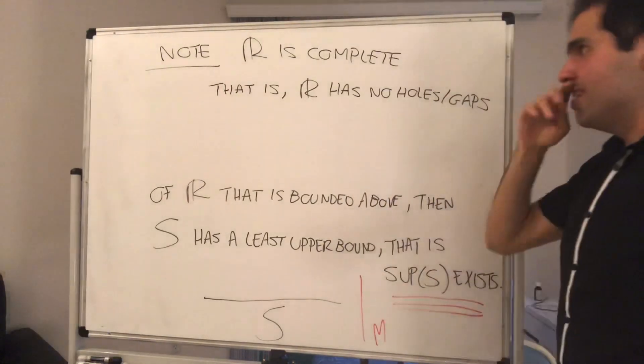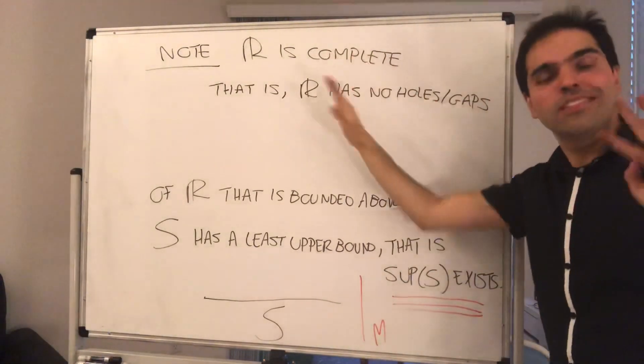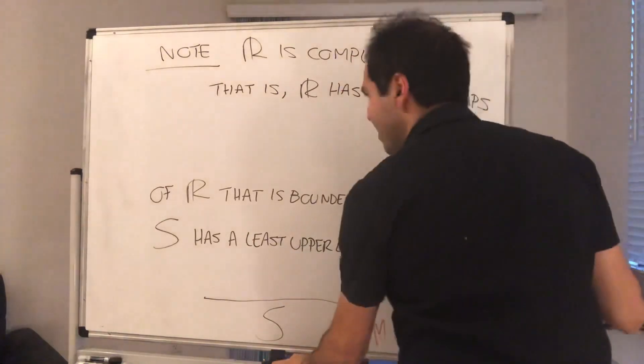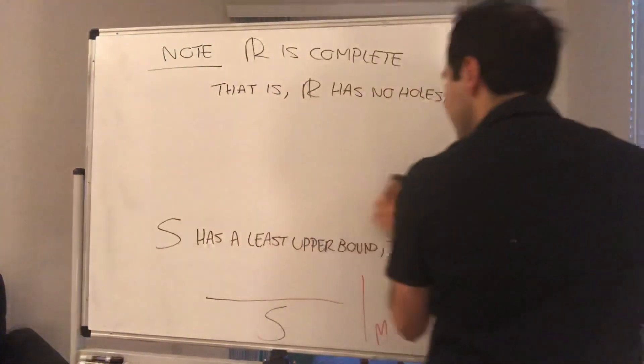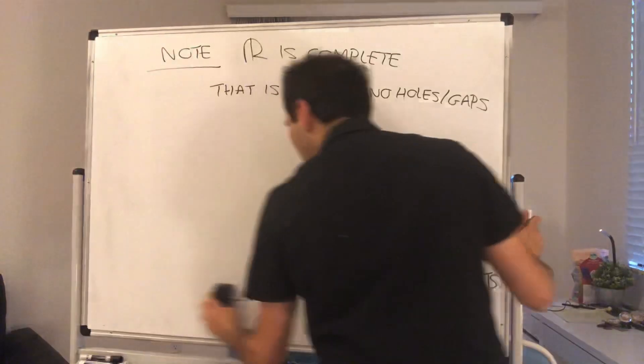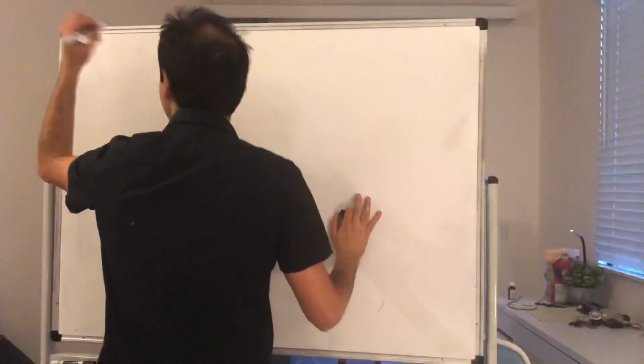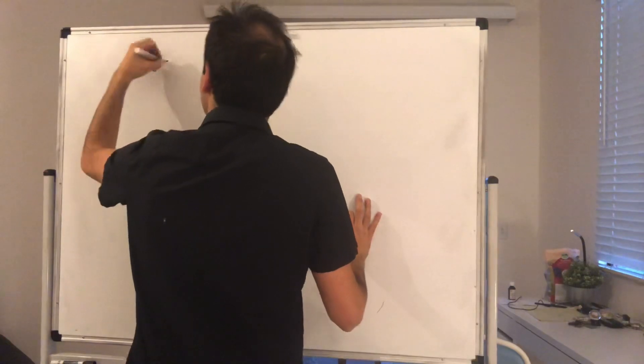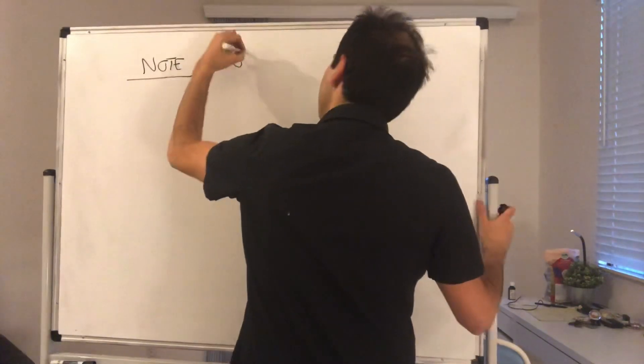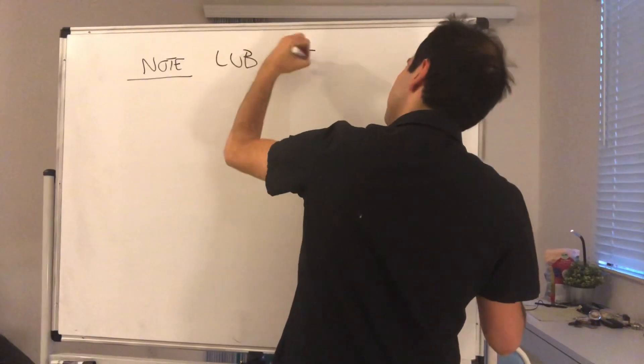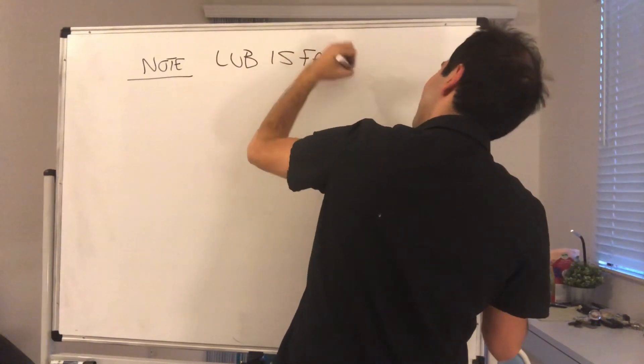For instance, and again, this is actually what makes R so much more different from the rational numbers. Because it turns out this property is false for the rational numbers. And let me give you an example. So note, LUB is false for Q.